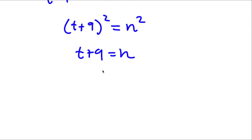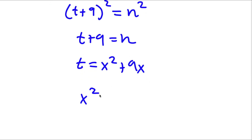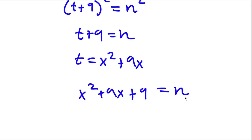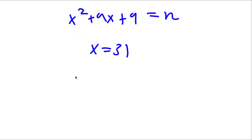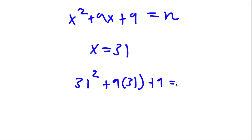Now remember t equals x² + 9x. So this means x² + 9x + 9 equals n. And also remember x equals 31, so 31² + 9 times 31 + 9 equals n.